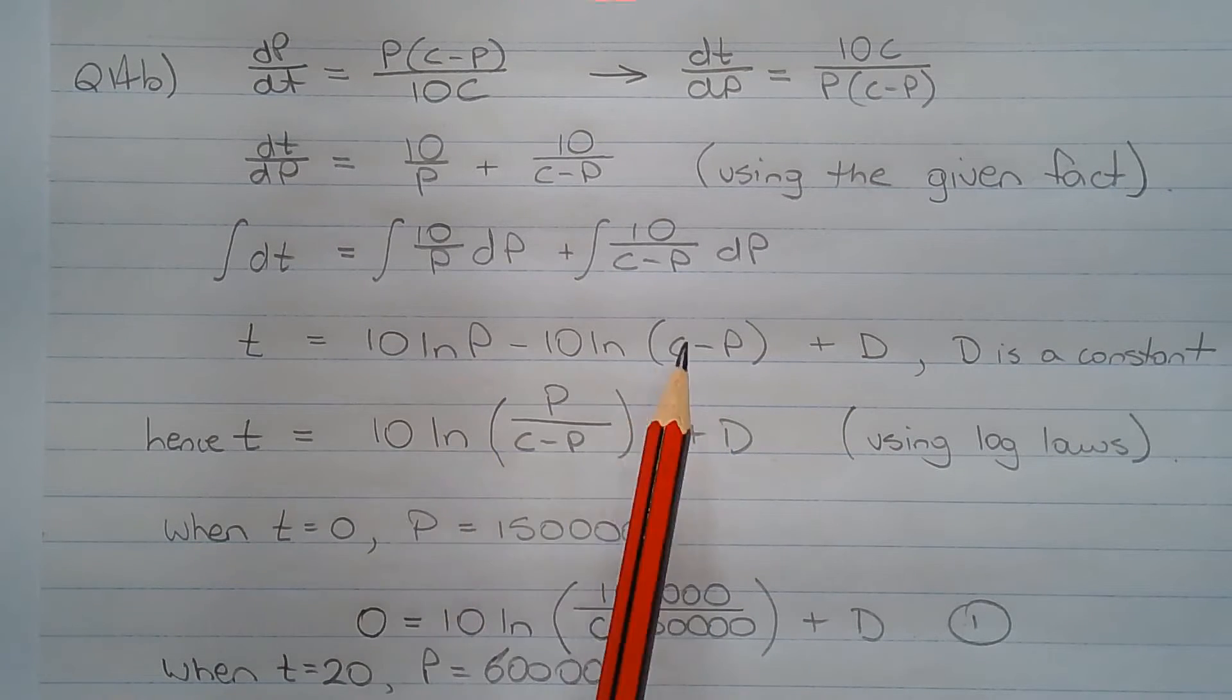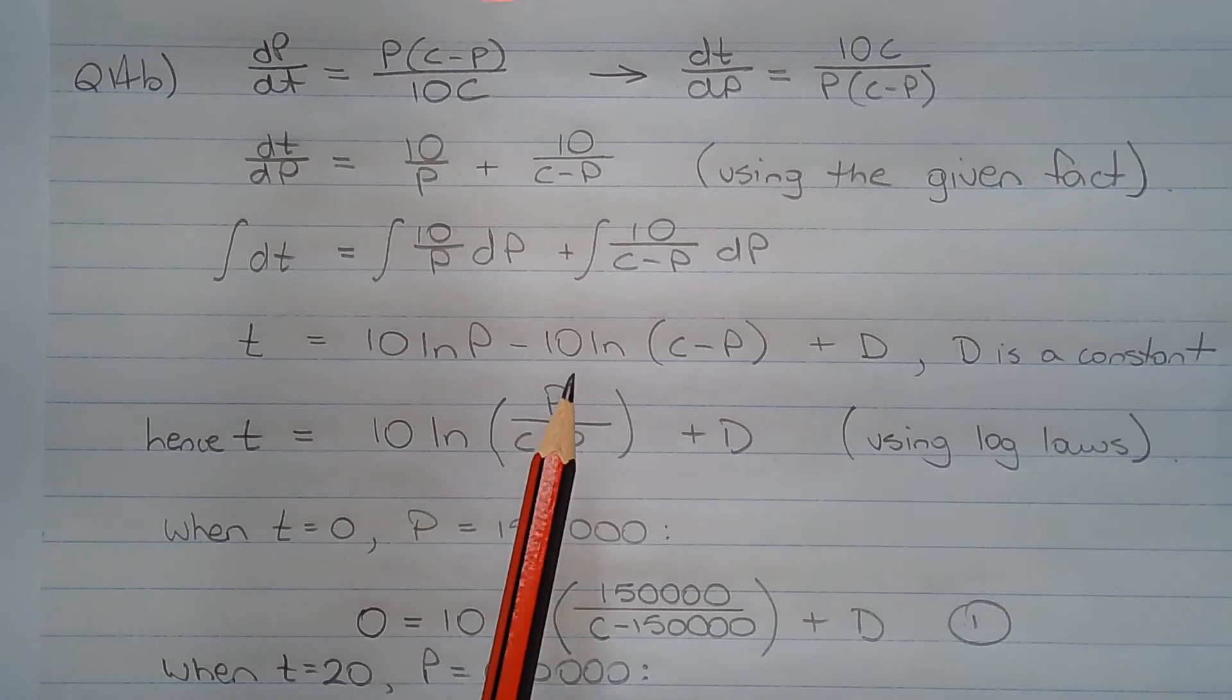Now combining the two terms on the right hand side using log laws, since they both involve natural logarithms, t equals 10 ln of p over (c minus p) plus the constant d.